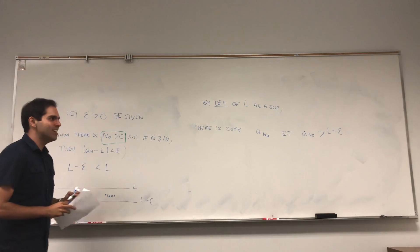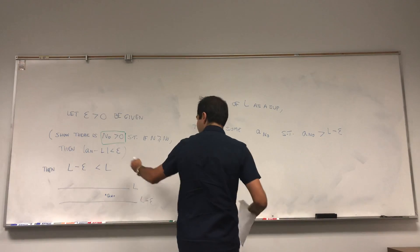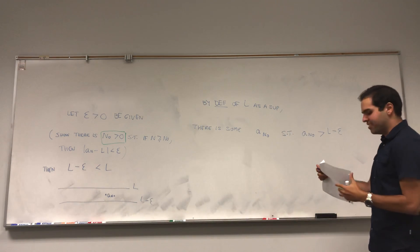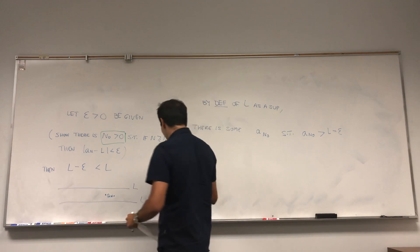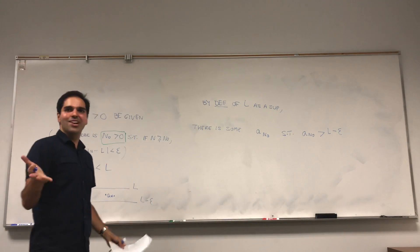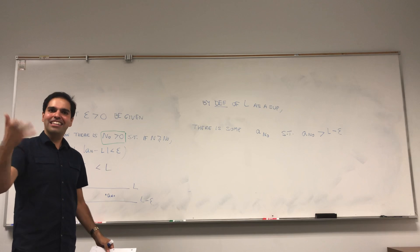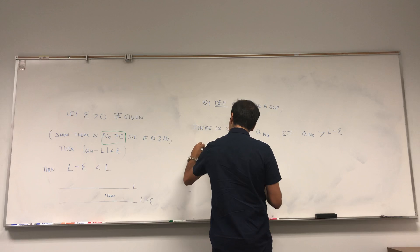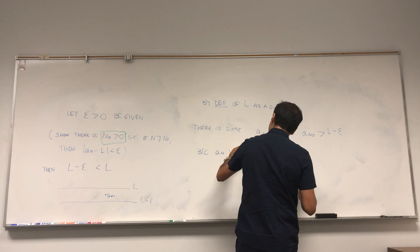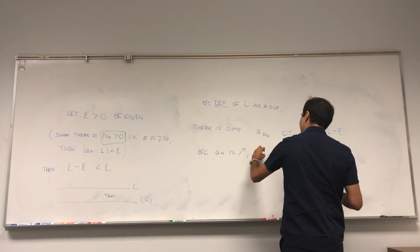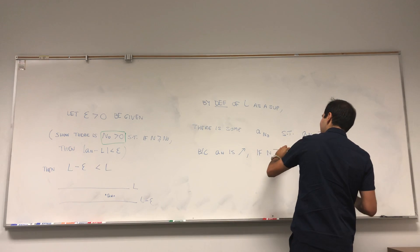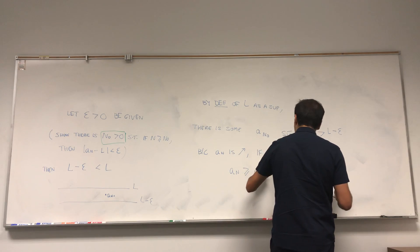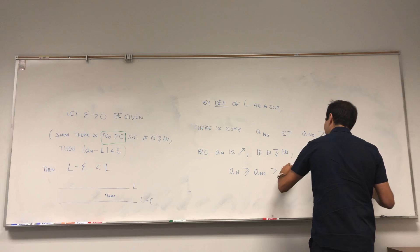By the definition of L as the supremum, there must be some a_{n_0} such that a_{n_0} > L − epsilon. This n_0 is the solution to our problem. Now, because a_n is increasing, if n ≥ n_0 then a_n ≥ a_{n_0}, and that is greater than L − epsilon. So we conclude that a_n > L − epsilon.